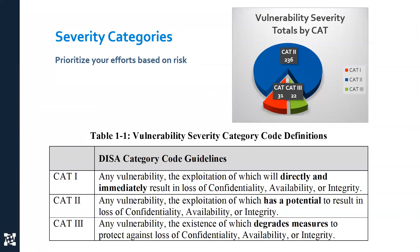There are about 300 items, and they have severity categories defined by DISA. Category 1 is most important — ones that directly and immediately result in loss of confidentiality, availability, or integrity, such as denial of service or unauthorized access. Category 2 items have potential — there's a weakness but you don't necessarily know how to exploit it. Looking at the pie chart, most items fall in Category 2. Category 3 items will degrade your measures — only 22 out of almost 300. If you're just getting started, do all the Cat 1s first, then Cat 2.